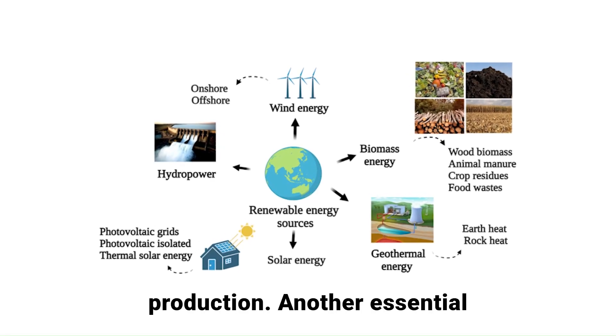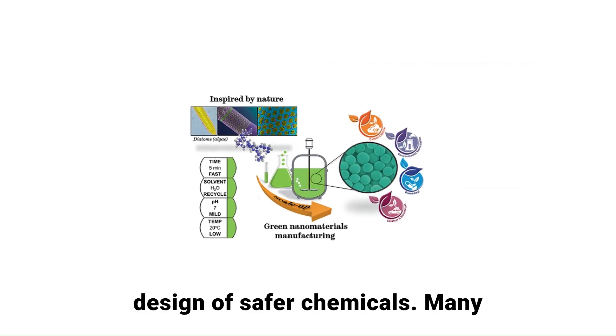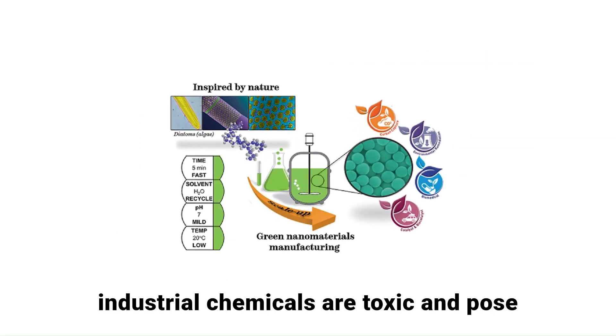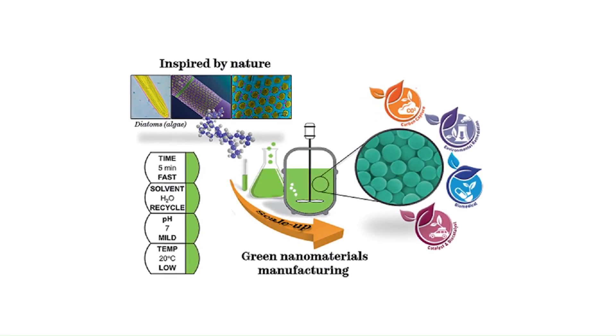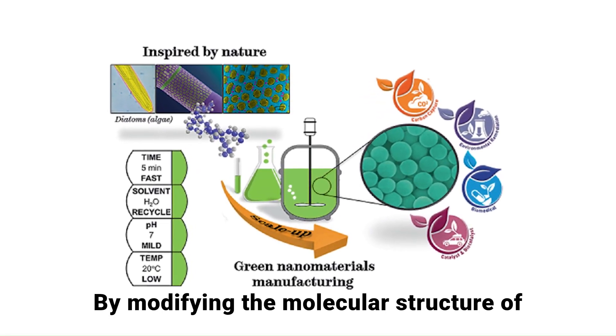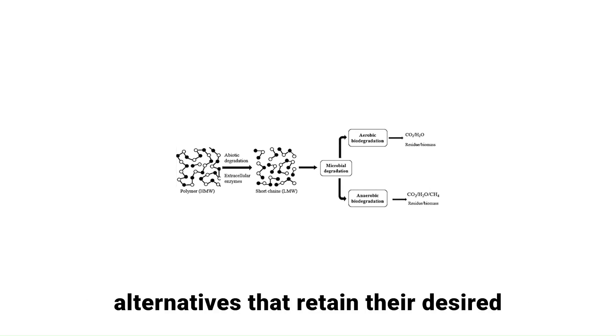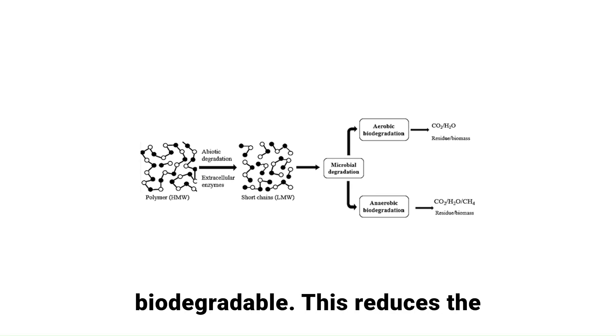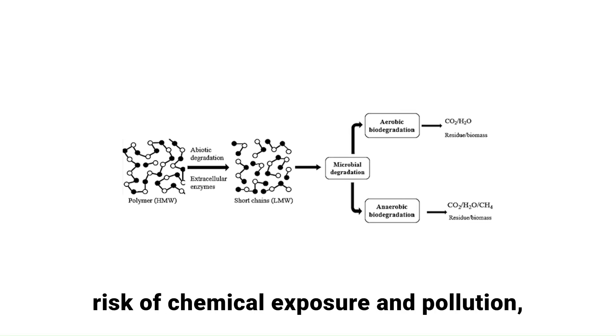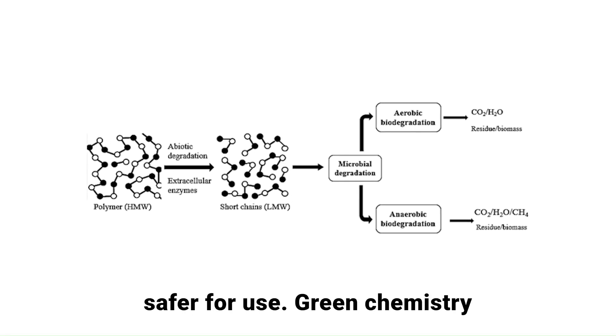Another essential principle of green chemistry is the design of safer chemicals. Many industrial chemicals are toxic and pose risks to human health and ecosystems. By modifying the molecular structure of these substances, scientists can develop alternatives that retain their desired functionality while being non-toxic and biodegradable. This reduces the risk of chemical exposure and pollution, making industrial and consumer products safer for use.